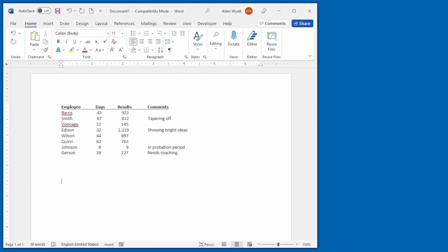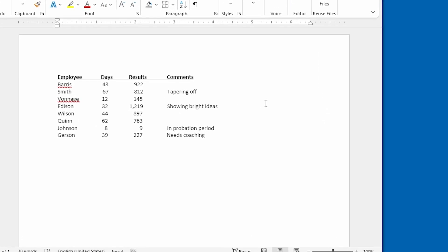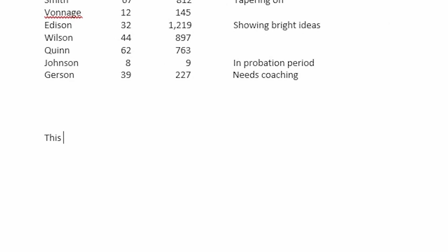As you create your documents, Word keeps track of a lot of characters. I can type a sentence and it appears just fine on the screen. There's a potential problem, however. As I type along, I can tell where my sentences begin and end, but I cannot easily tell where paragraphs begin and end. I also can't tell where I may have pressed the spacebar a few times or where I pressed the tab key.